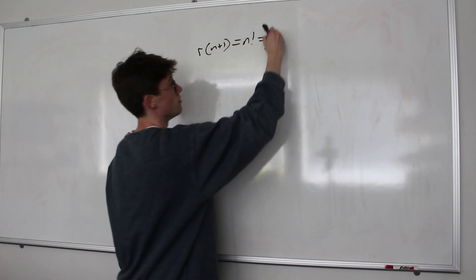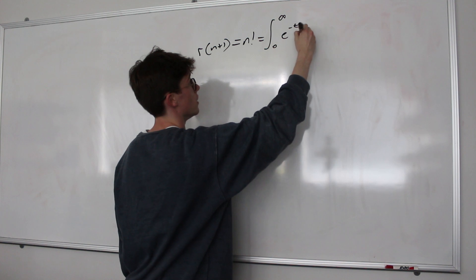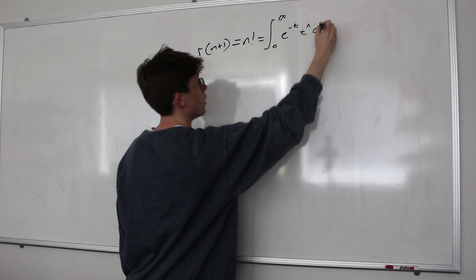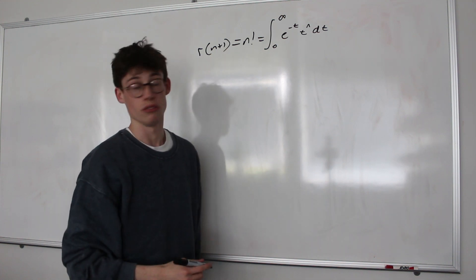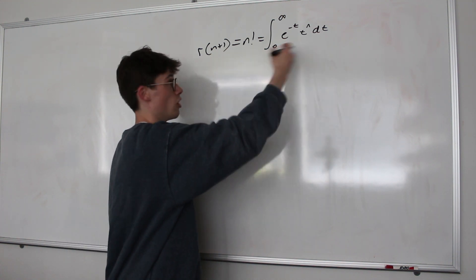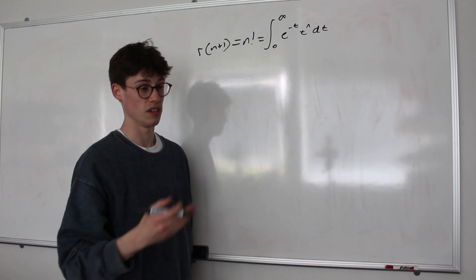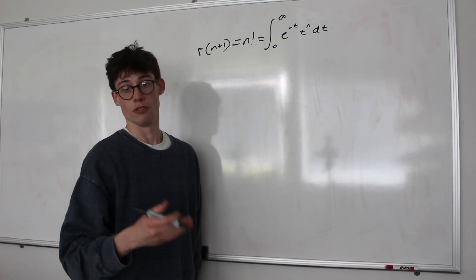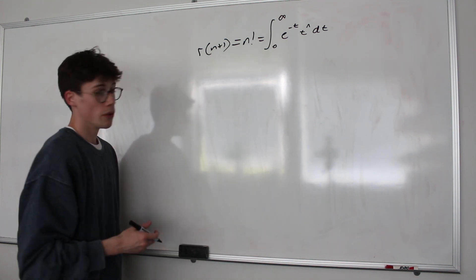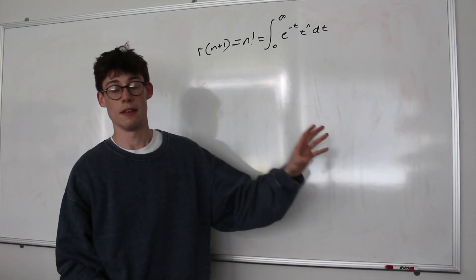And the gamma function is defined as the integral from 0 to infinity of e to the negative t times t to the n with respect to t. And if you just choose any integer value of n and try and work this integral through for yourself, you'll see very quickly how it works. It just uses repeated integration by parts to produce the factorial of the number that you put in. But the question is, how can we use this to make approximations for large values of n in n factorial?